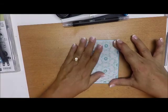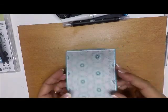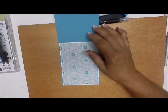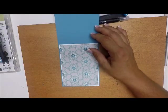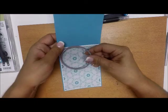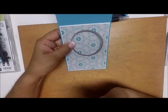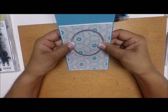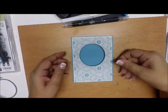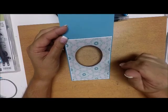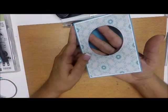Now we're going to open this up and take our circle framelit. I'm going to position it where I want it on the card and run that through my big shot.